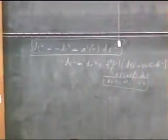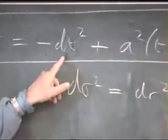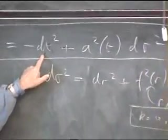Just to remind you, the metric we use in cosmology: ds squared is minus dt squared. There's a time, a universal time in cosmology.